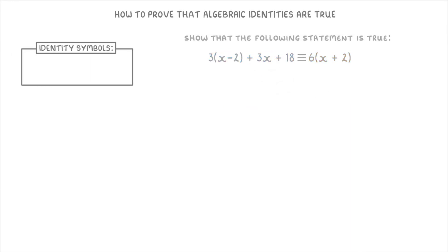Now how to use identity symbols is a whole other topic, but all you need to know for proofs is that if an equation contains an identity symbol, you can't move terms from one side of the equation to the other side.